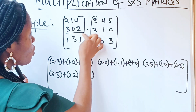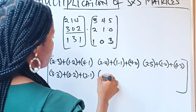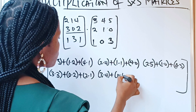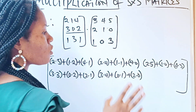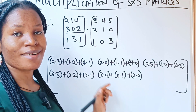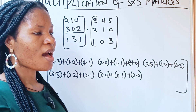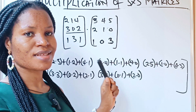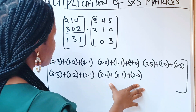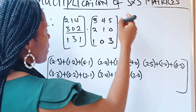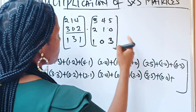Now let's use the second row and the second column to form the second number: 3 times 4, plus 0 times 1, plus 2 times 0. Then the second row multiplies the third column to form the third number: 3 times 5, plus 0 times 0, plus 2 times 3.